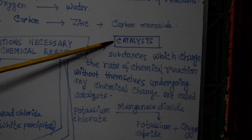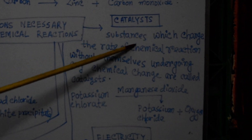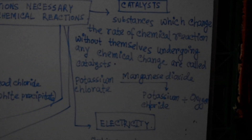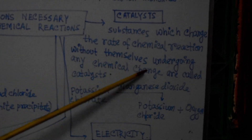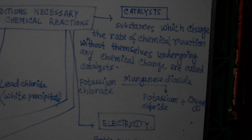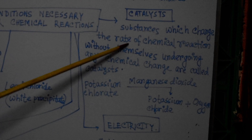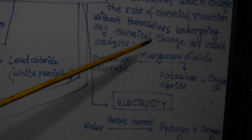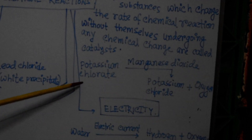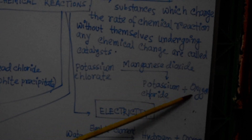The fifth and most important condition is the catalyst. Catalysts are substances which change the rate of chemical reactions without themselves undergoing any chemical change — they remain intact after the reaction but can increase or decrease the rate. For example, when potassium chlorate is heated in the presence of manganese dioxide, it breaks down to produce potassium chloride and oxygen. Manganese dioxide remains intact and is the catalyst, while potassium chlorate is the reactant and potassium chloride and oxygen are the products.